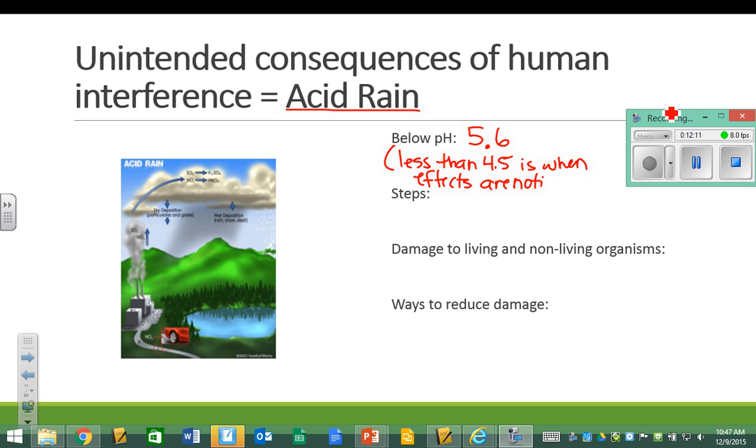When the pH is less than 4.5, that's when you actually start noticing some negative side effects from the rain having a low pH. So, would I put this as a numeric response question? No, because there's not really a number that I could say, oh yeah, that's acid rain.